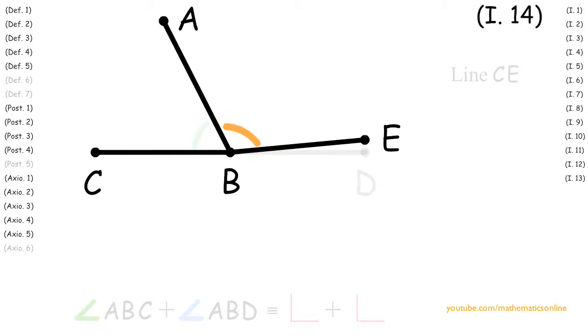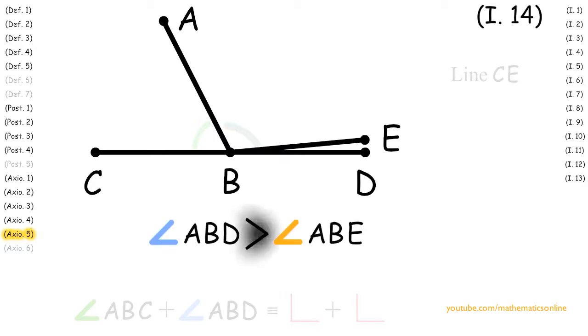First, looking at angle ABE and angle ABD, we can see that by Axiom 5, angle ABD is greater than angle ABE.